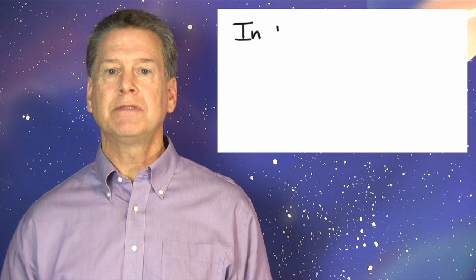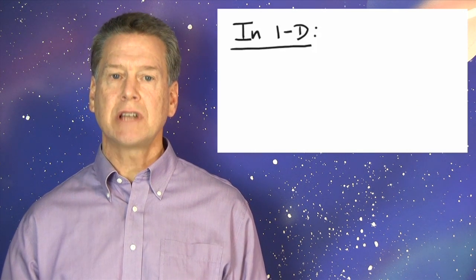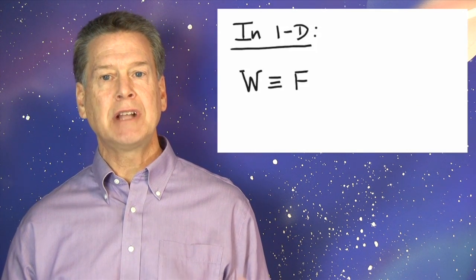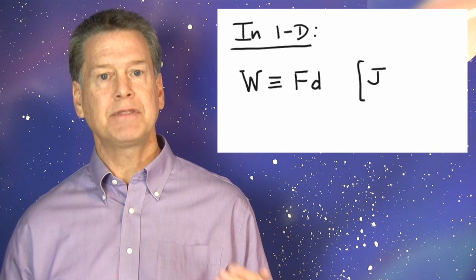Let's pause here to review. In one dimension, we've defined work to be force times distance. Capital W is defined as F times D.